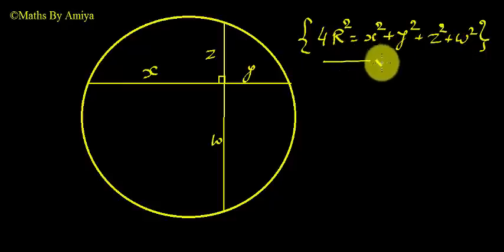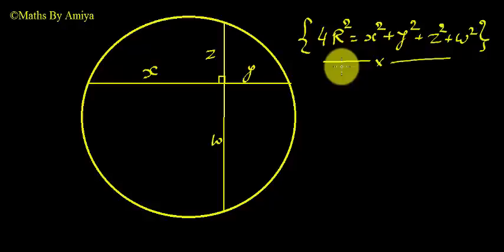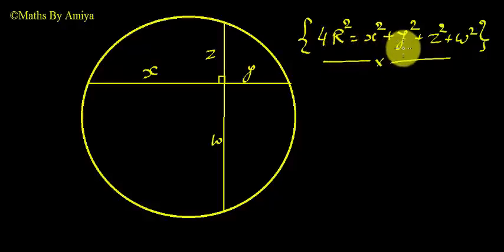Whenever we have a circle with a chord and perpendicular chords, we apply 4r² = x² + y² + z² + w². This is my guest concept for the upcoming examination. Now the question is: how do we get 4r² = x² + y² + z² + w²?